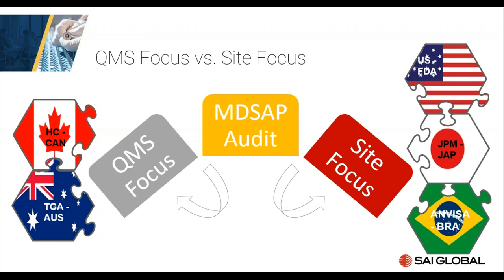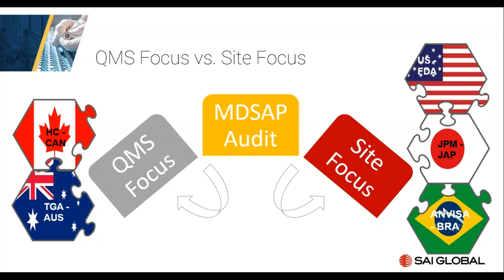If there were any FDA inspections in the past three to four years with a warning letter issued, auditors will verify the effectiveness of actions taken. When auditors are sent out, they are changing their perspective five times — auditing against Canadian, Australian, US, Japanese, and Brazilian requirements. Changing these heads and switching from one country to another is not an easy process, but the requirements are all spelled out in the audit model and companion document.